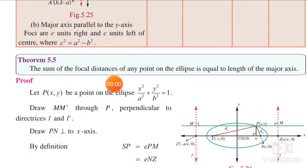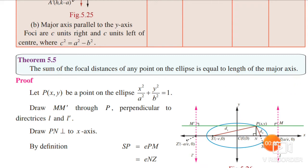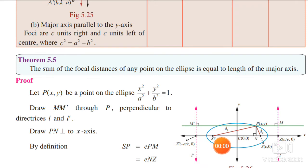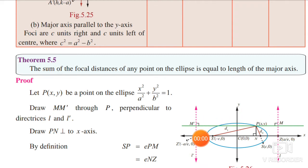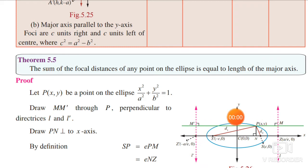Theorem 5.5: The sum of the focal distances of any point on the ellipse is equal to the length of the major axis. The length of the major axis formula is 2a, where a is the semi-major axis. So we need to prove that SP plus S'P is equal to 2a, where S and S' are the foci.